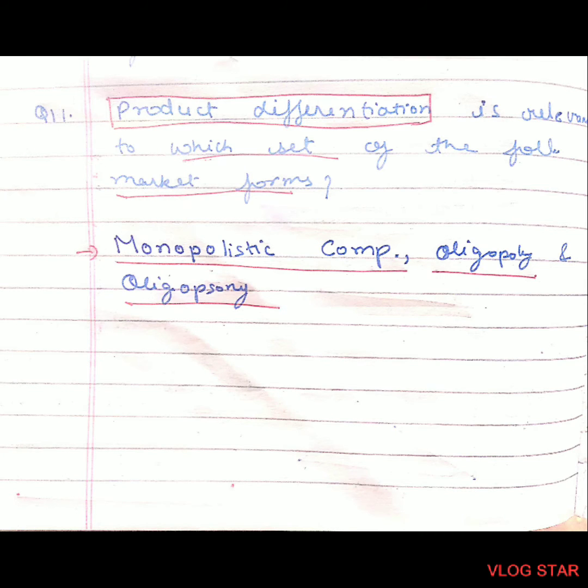Question 11. Product differentiation is relevant to which set of the following markets? Product differentiation is available in monopolistic competition, oligopoly, and oligopsony.